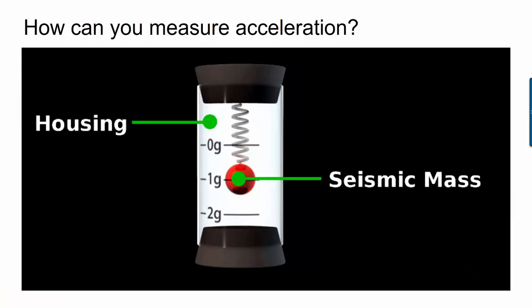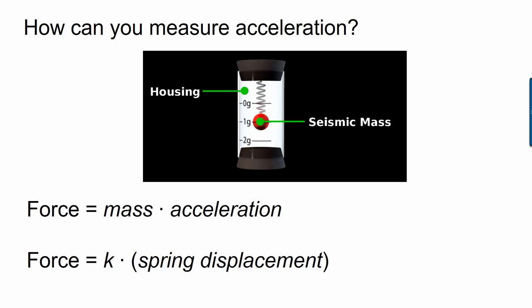So how do they work? You can measure acceleration if you have a spring and a mass whose mass you know, and those two things are attached to some housing. There's two simple equations that let you calculate what the acceleration is. First, there's Newton's second law of motion, which is force equals mass times acceleration. The second is Hooke's law, which says that force is equal to K, which is a spring constant, times spring displacement. Let me say a little bit more about each of those things.